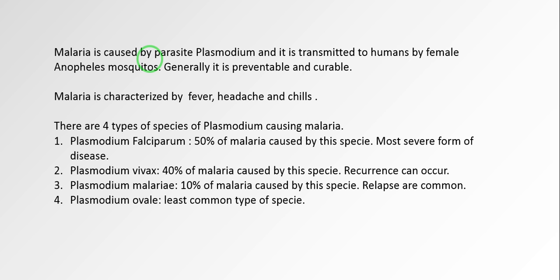Plasmodium vivax shows recurrence, meaning that after cure the disease and infection appear again. It generally infects liver cells first. Plasmodium malariae causes generally 10% of malaria cases and can cause relapse - meaning after cure infection may occur again. Plasmodium ovale is the least common type of species responsible for malaria. The first three types are common in humans and the fourth type generally causes infection in birds or reptiles.